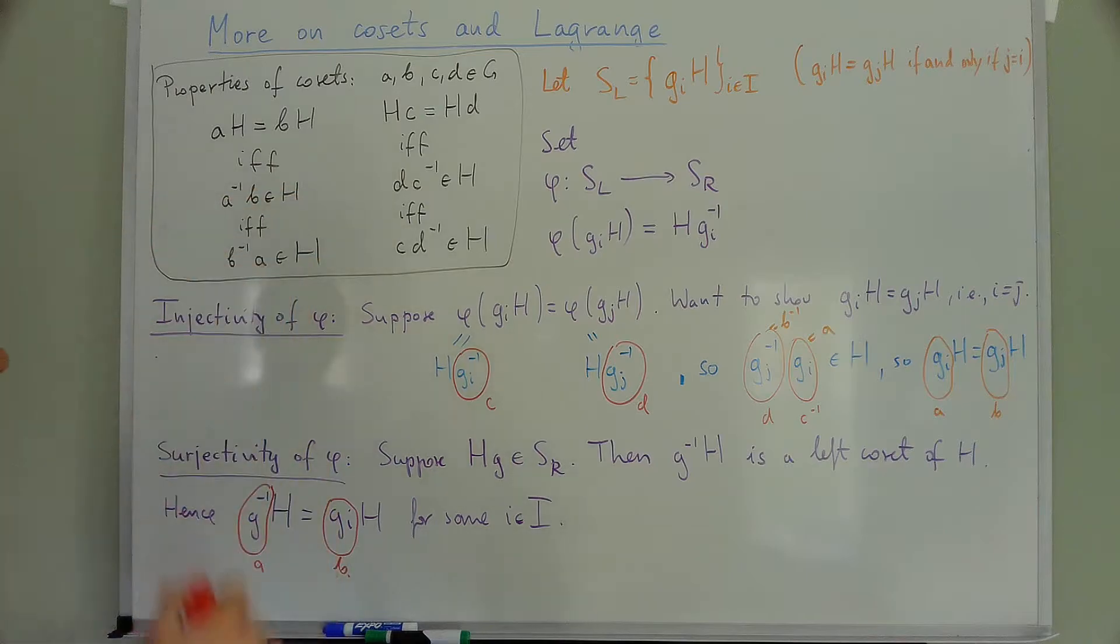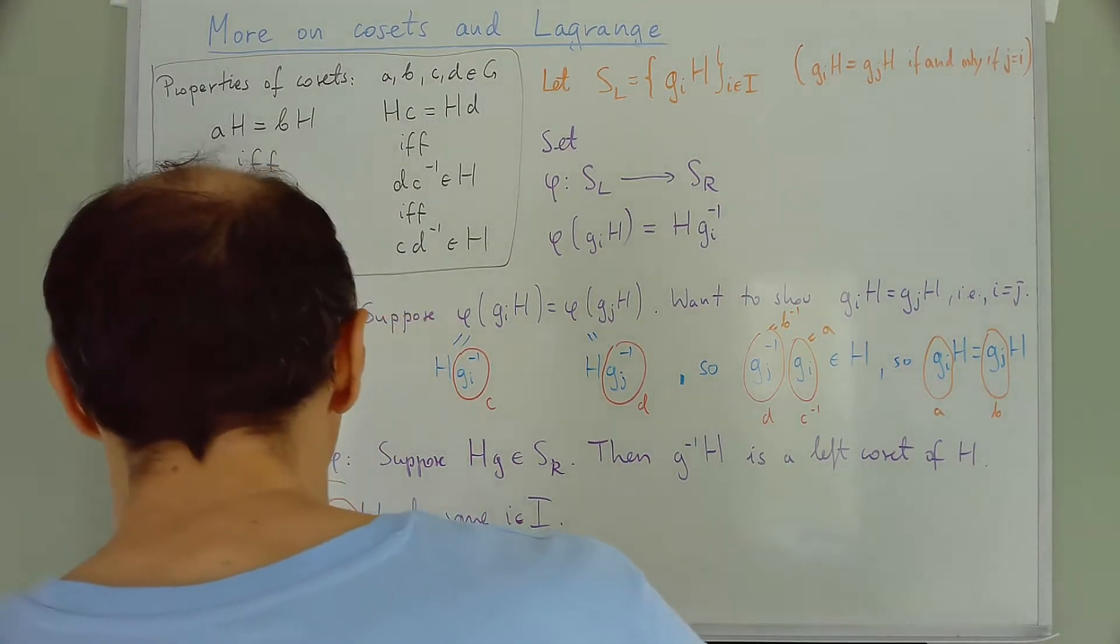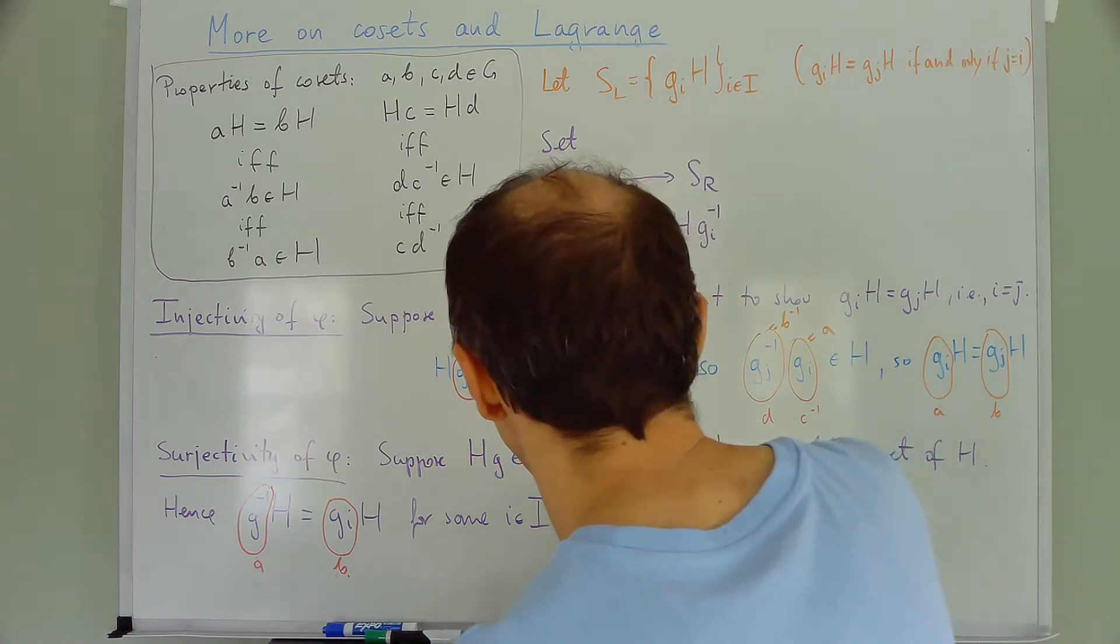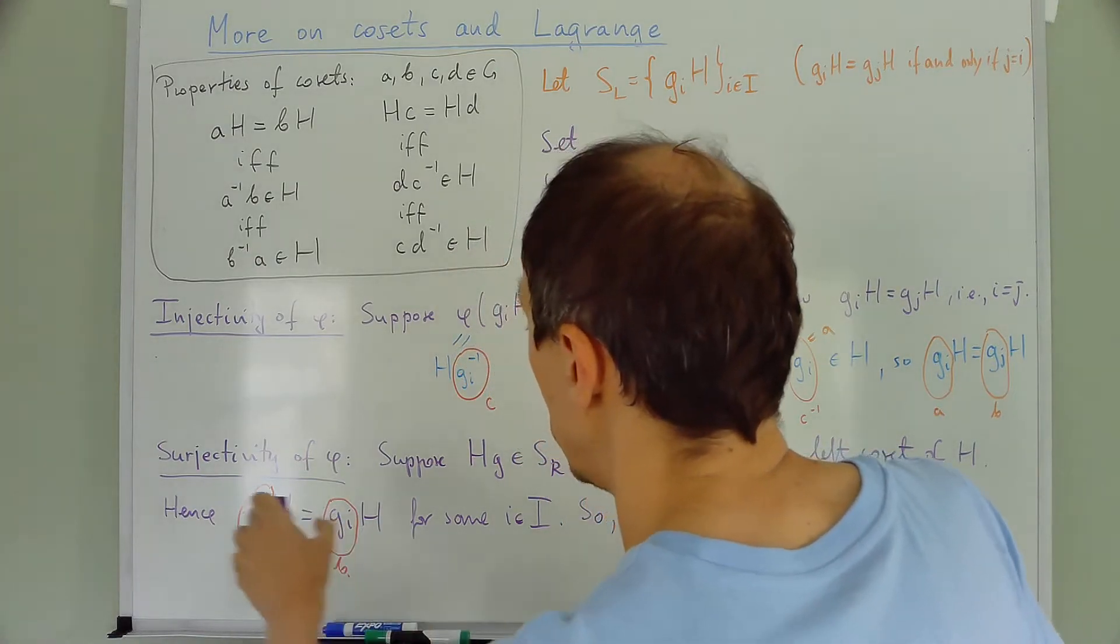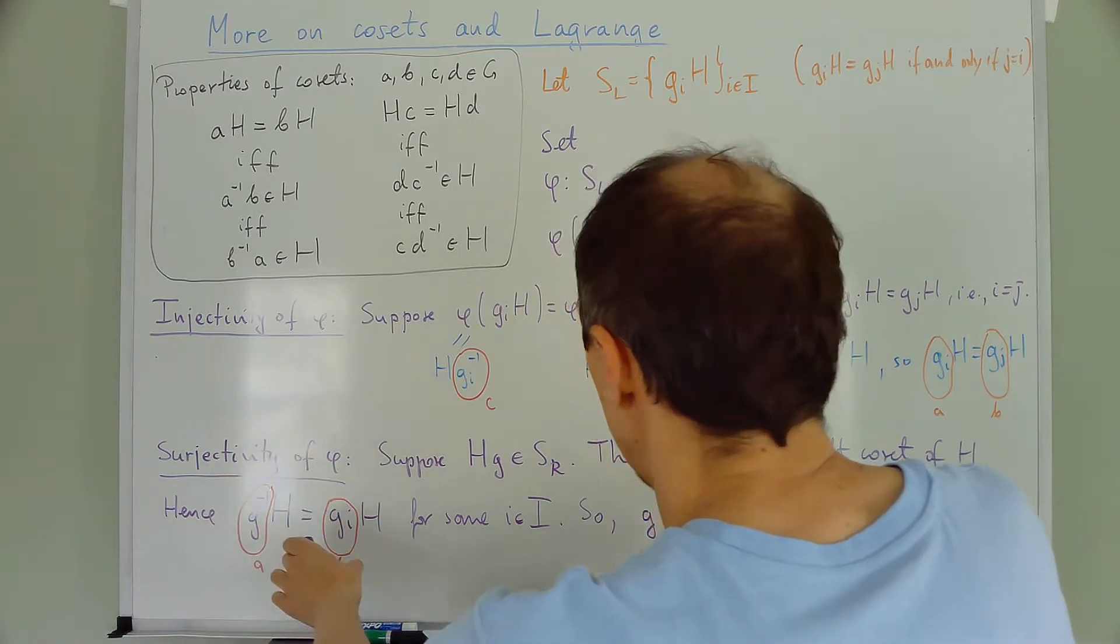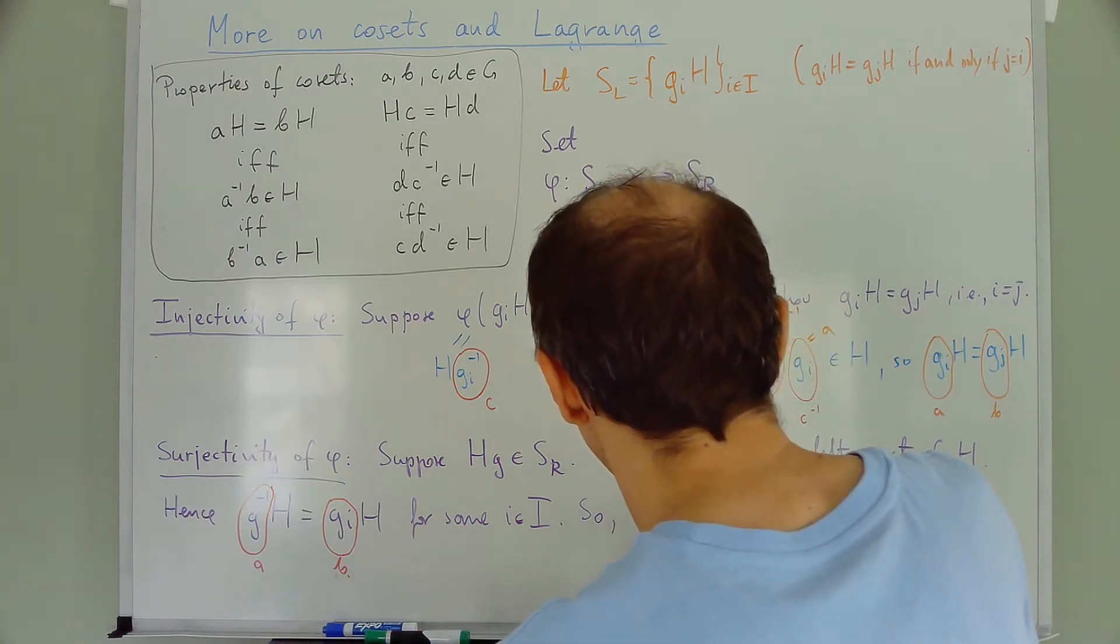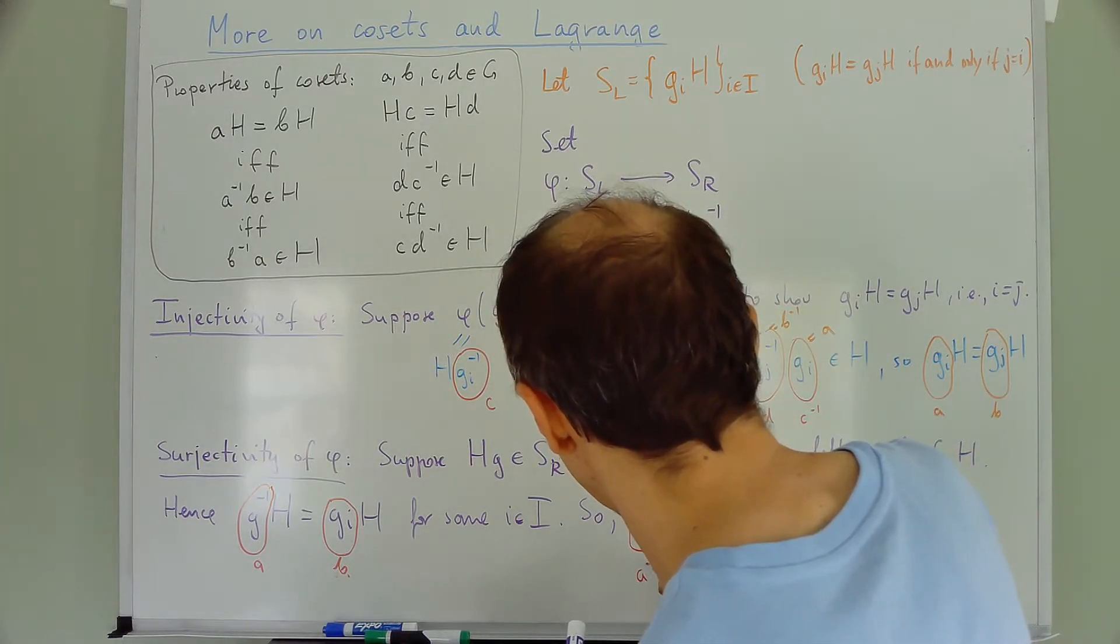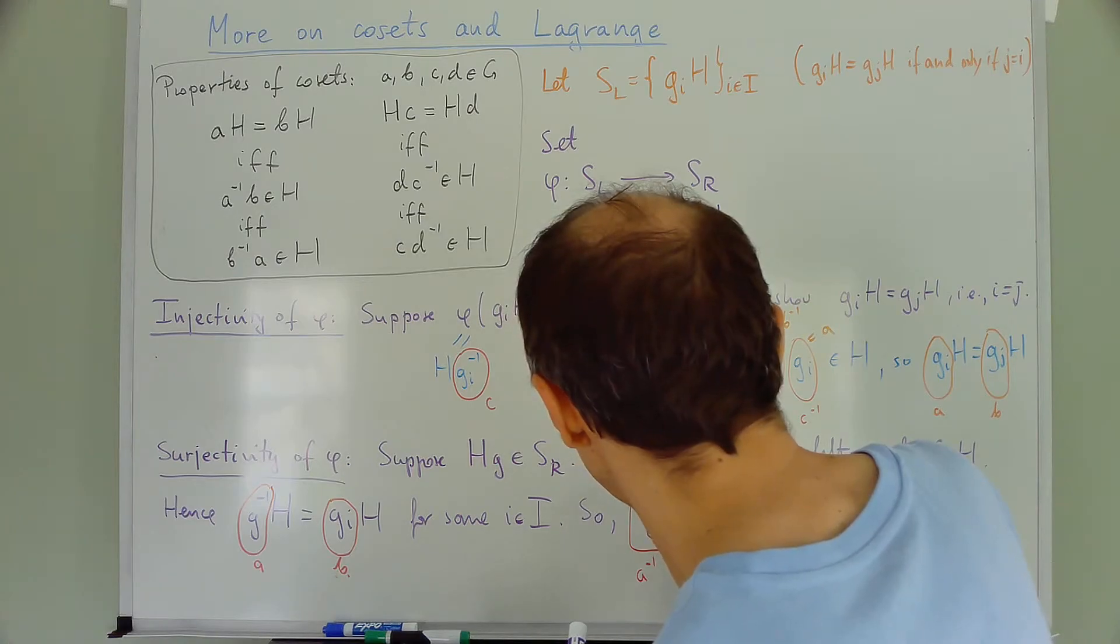And I will use again the H inverse B. So A inverse B. So the inverse of A, which is G, Gi is in H, right? So G is again the inverse of A. And Gi is B.